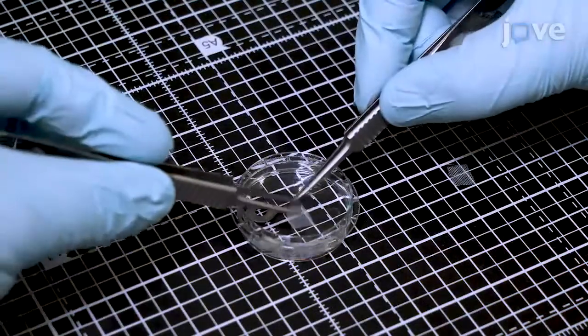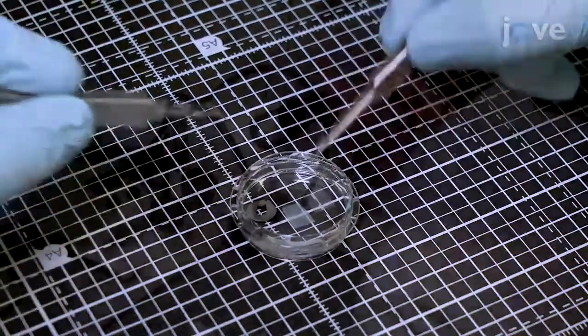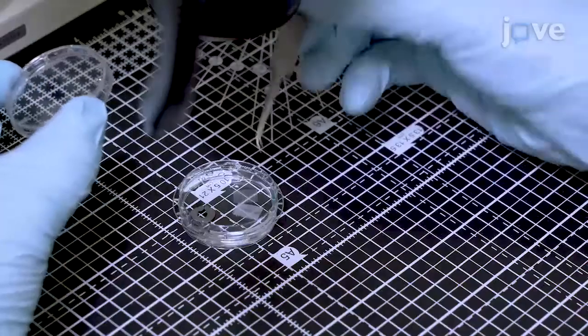Immerse the coarse mesh and a weight in a 35 millimeter Petri dish of imaging solution and place the fine mesh under a dissecting microscope.